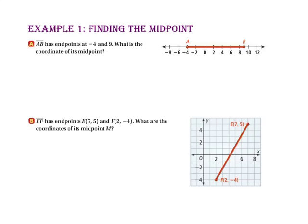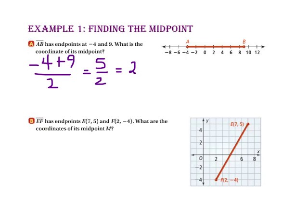In Example 1, we'll find the midpoint of a segment on a number line and the midpoint of a segment on a coordinate plane. In part A, segment AB has endpoints negative 4 and 9. To find the coordinate of the midpoint, we take the average of the two endpoints: negative 4 plus 9 divided by 2. Since negative 4 plus 9 is 5, then 5 divided by 2 is 2.5. So the coordinate of our midpoint is 2.5, which is about right here.